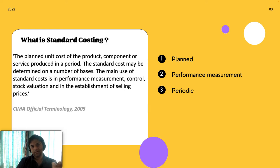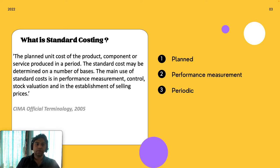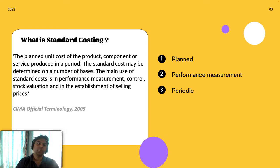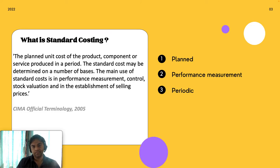If you read those three sentences carefully, you'll see that the application of standard costing is very wide. It's not restricted to just calculating a cost — it also covers control, performance measurement, stock valuation, and establishing selling prices. The first key point from this definition is that standard costing is related to planned activities, meaning it is derived from your business plan.